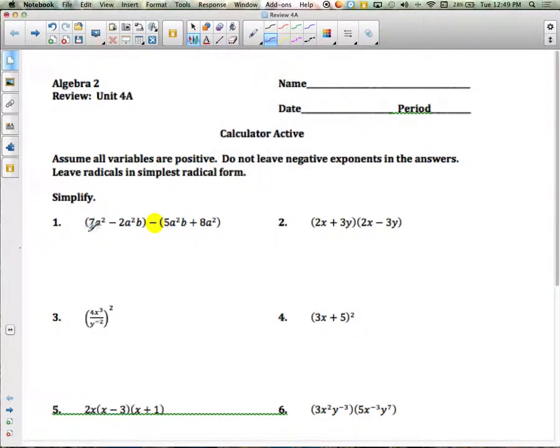I have a 7a squared, so I go over to the next group and look for an a squared. There is an 8a squared. So what is 7 minus 8? That gives you a negative 1a squared.